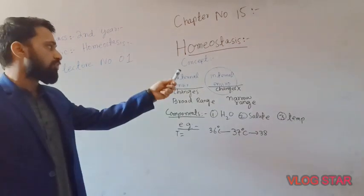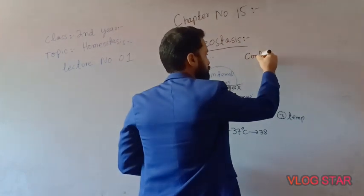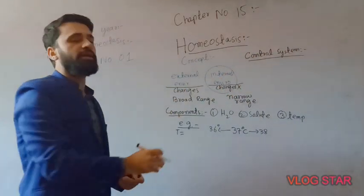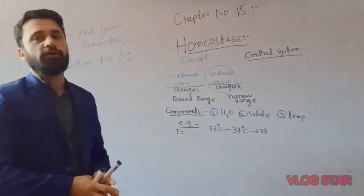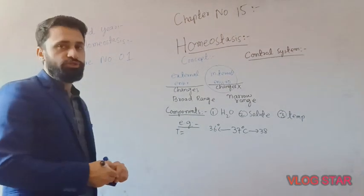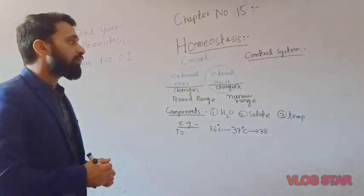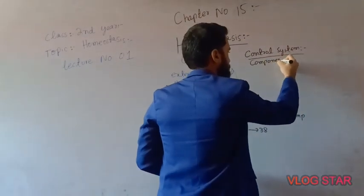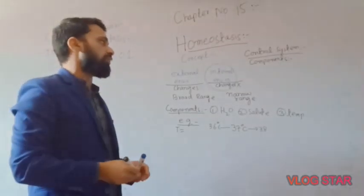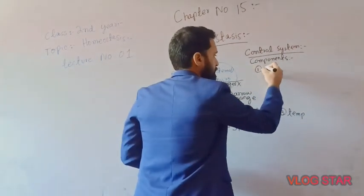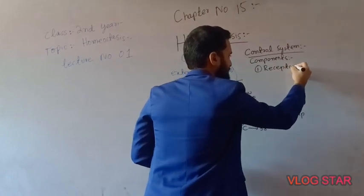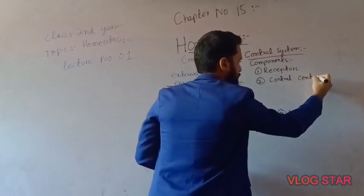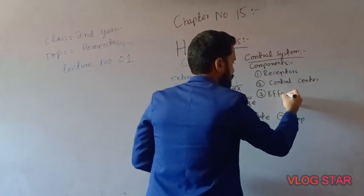Why do we control this whole system? What do we call this control system and how do we control it? Like other physical control systems, it has different components. The components are: one, receptors; two, control center; and three, effectors.